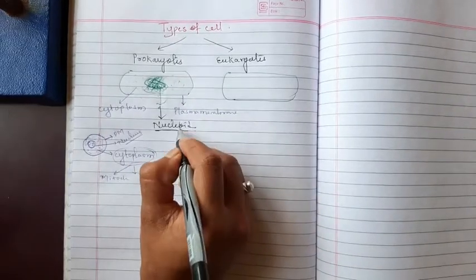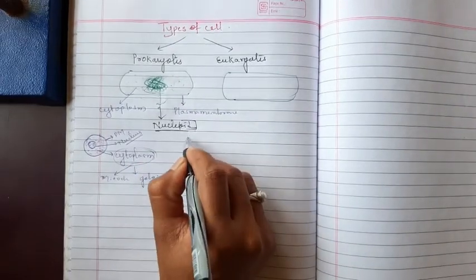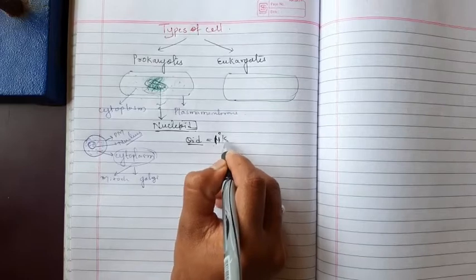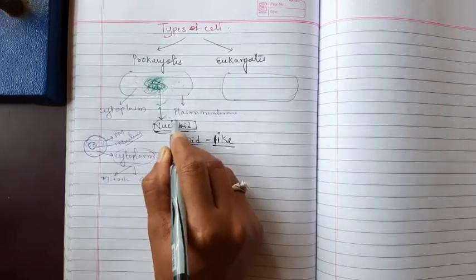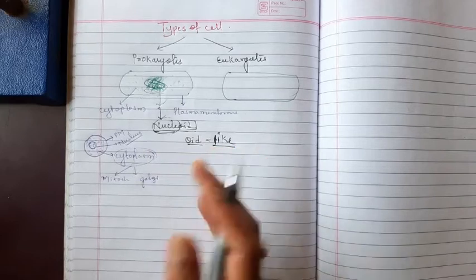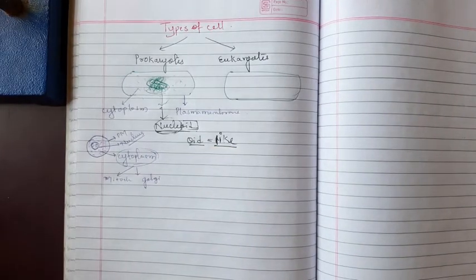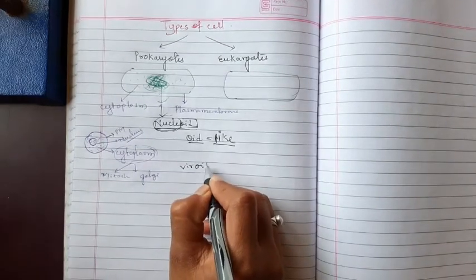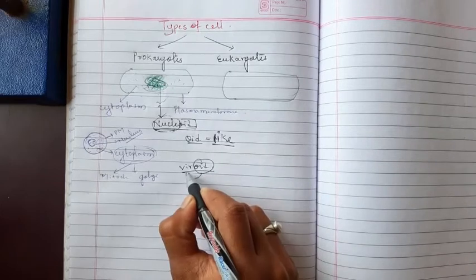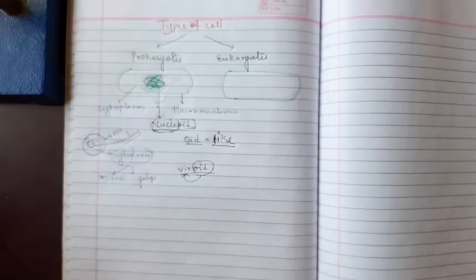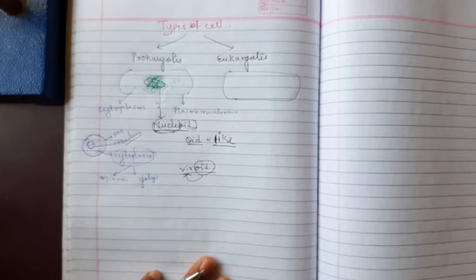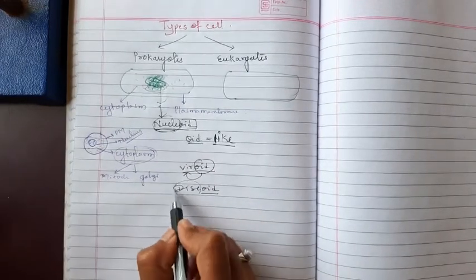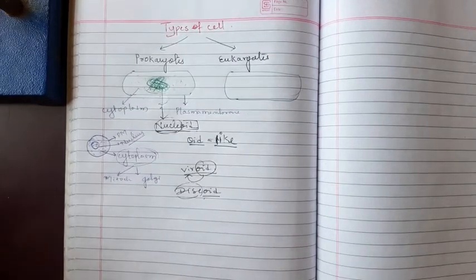Remember, any word which ends with '-oid' means 'like.' Nucleoid means nucleus-like material, but it is not a true nucleus. For example, viroid means virus-like material but it is not exactly a virus. Discoid means disc-like material but it is not exactly a disc.